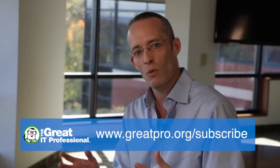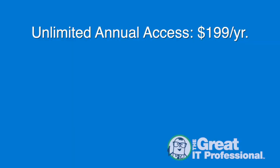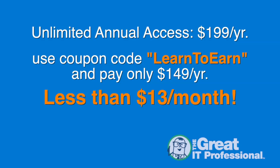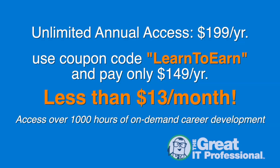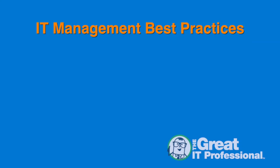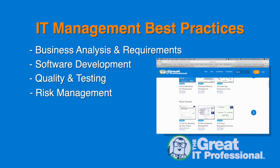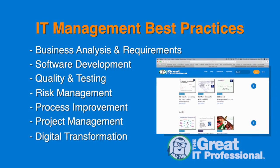My name is Michael Maloudis. If you'd like to watch the full 60 minutes of that last webcast while also getting complete unlimited access to our entire library of IT learning, simply visit our subscribe page at greatitpro.org/subscribe. Unlimited annual access is $199 per year, but if you use the coupon code 'learntoearn' you can drop that membership fee to just $149 — that's less than $13 per month for unlimited access to over a thousand hours of on-demand career development covering business analysis, software development, quality and testing, risk management, process improvement, project management, and digital transformation.